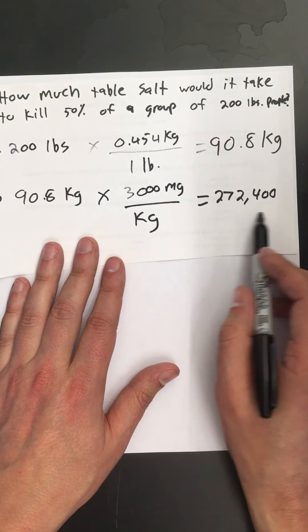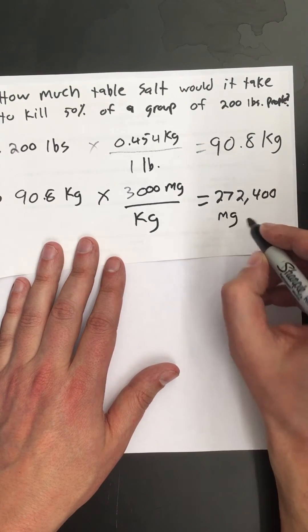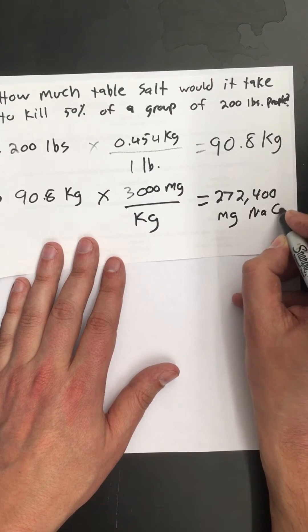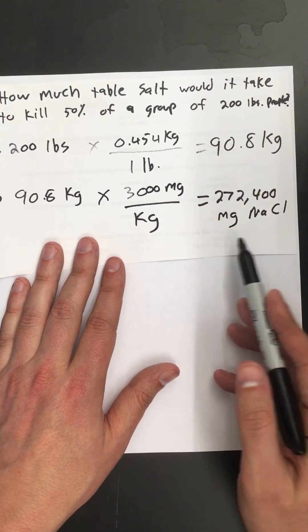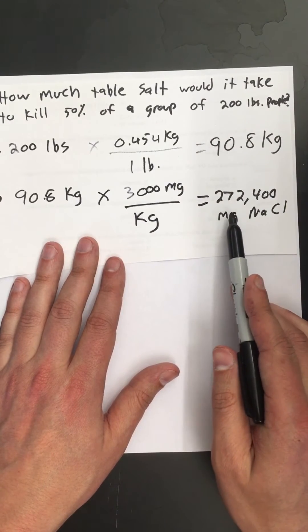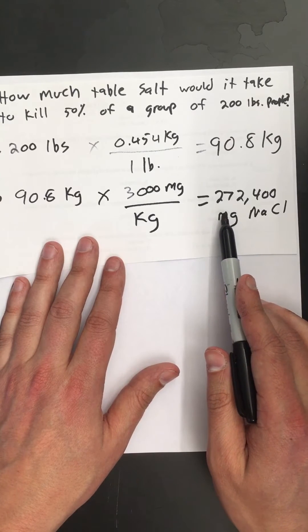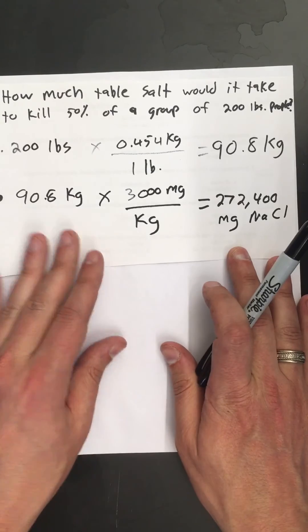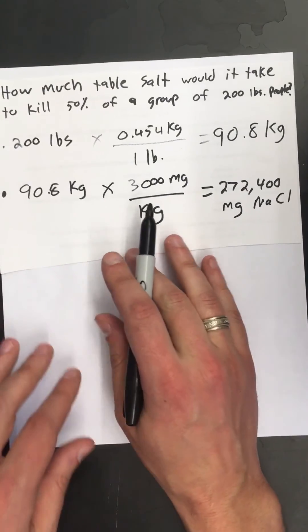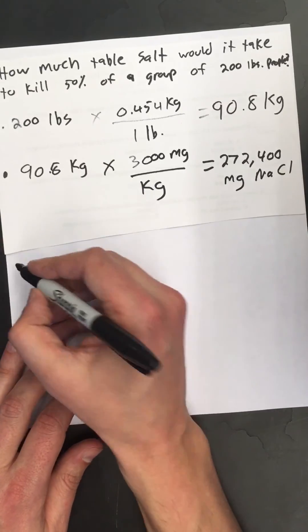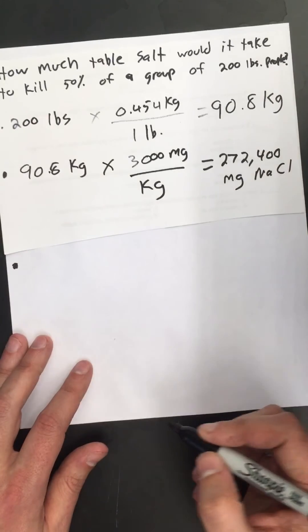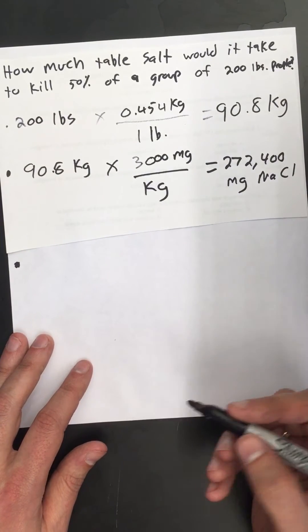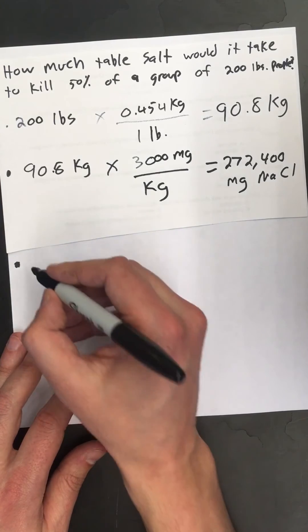Now the problem here is that that's in milligrams of sodium chloride, of table salt, and that's pretty unfamiliar. It's hard to have a concept of what 272,400 milligrams actually looks like. So let's keep converting this and try to get into something that's a little more familiar.